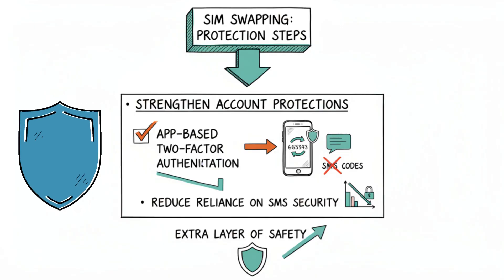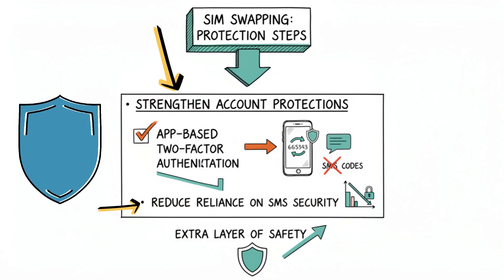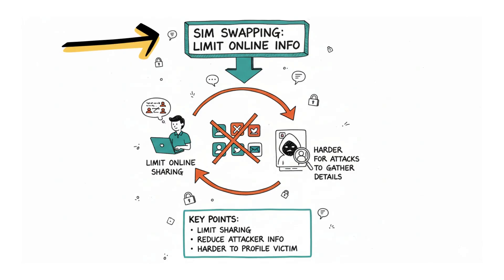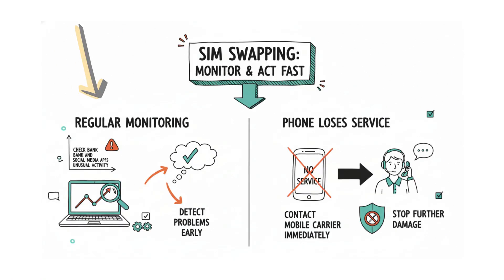To protect yourself from SIM swapping, it is important to reduce reliance on SMS-based security and strengthen account protections. Using app-based two-factor authentication instead of text message codes adds an extra layer of safety. Setting a carrier-level PIN or password helps prevent unauthorized changes to your mobile account. Limiting the amount of personal information you share online also makes it harder for attackers to gather details about you. In addition, regularly monitoring your accounts for unusual activity can help detect problems early, and if your phone suddenly loses service without explanation, contacting your mobile carrier immediately can stop further damage.